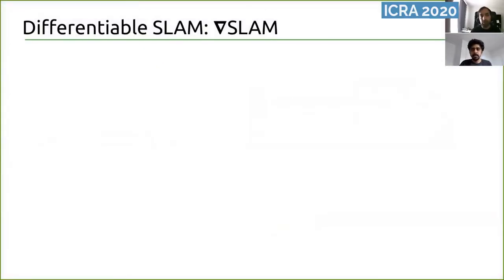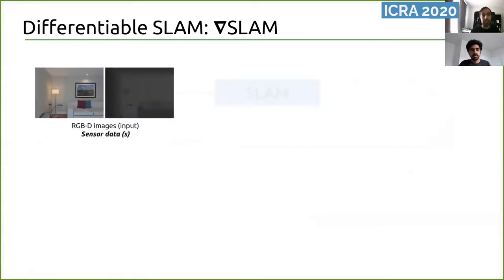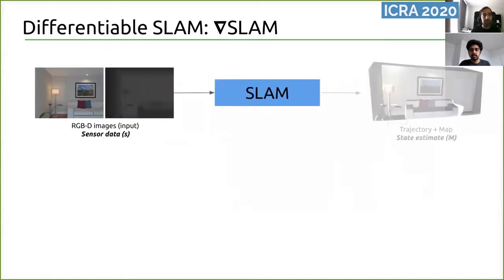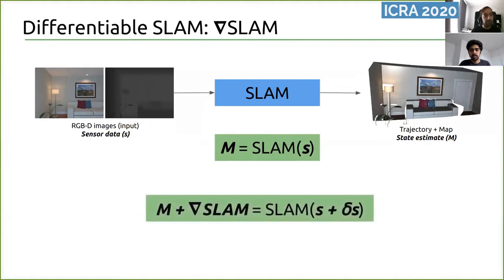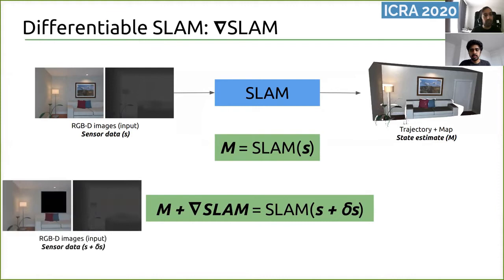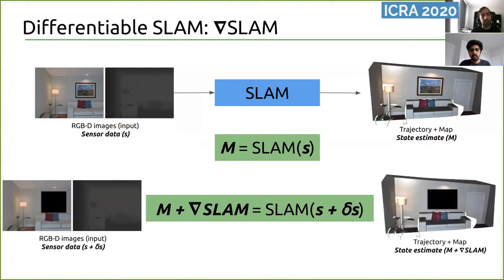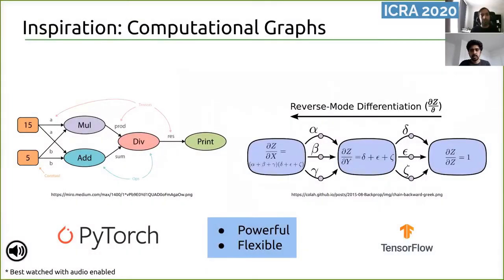In this work, we take a new approach to SLAM from the perspective of differentiability. Typically, RGBD SLAM systems take as input a sequence of color and depth images and estimate the camera trajectory and a map of the environment. SLAM is hence a mapping from sensor data denoted by s to a state estimate denoted by m. If this mapping were differentiable, then perturbing the sensor data s by a tiny delta s changes the reconstruction m by the gradient of the SLAM function with respect to s. To do so, we take inspiration from computational graphs — a paradigm where if a computation can be expressed as a composition of elementary differentiable operations, we can calculate gradients with respect to all intermediate variables involved.